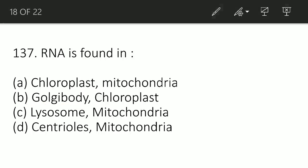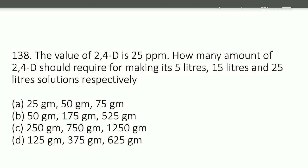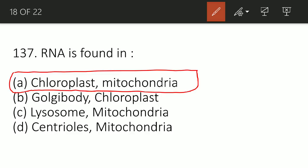RNA is found in which organelles? The correct option is option number A: Chloroplast and Mitochondria. Generally, mitochondria and chloroplast contain their own genome as well as their own biosynthetic machinery, so they can make RNA and other proteins. So RNA will be found in chloroplast and mitochondria.